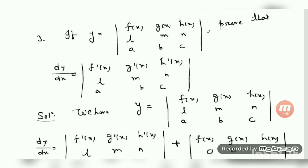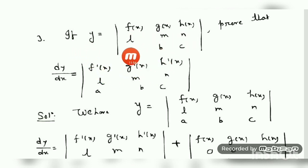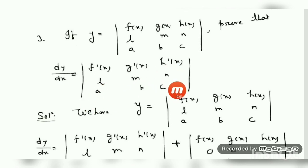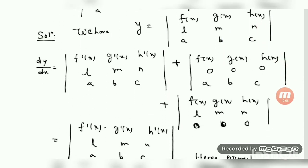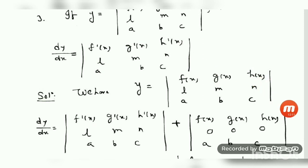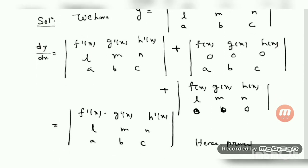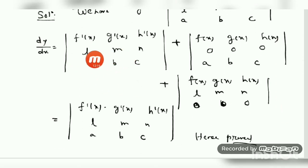Let us go to the next question — this is a question from your book, from the miscellaneous exercise. Your question is: y equals the determinant with first row f(x), g(x), h(x); second row l, m, n; third row a, b, c. You have to prove that dy/dx equals the determinant with first row f'(x), g'(x), h'(x); second row l, m, n; third row a, b, c. Taking the derivative row-wise: d/dx of f(x) is f'(x), d/dx of g(x) is g'(x), d/dx of h(x) is h'(x).